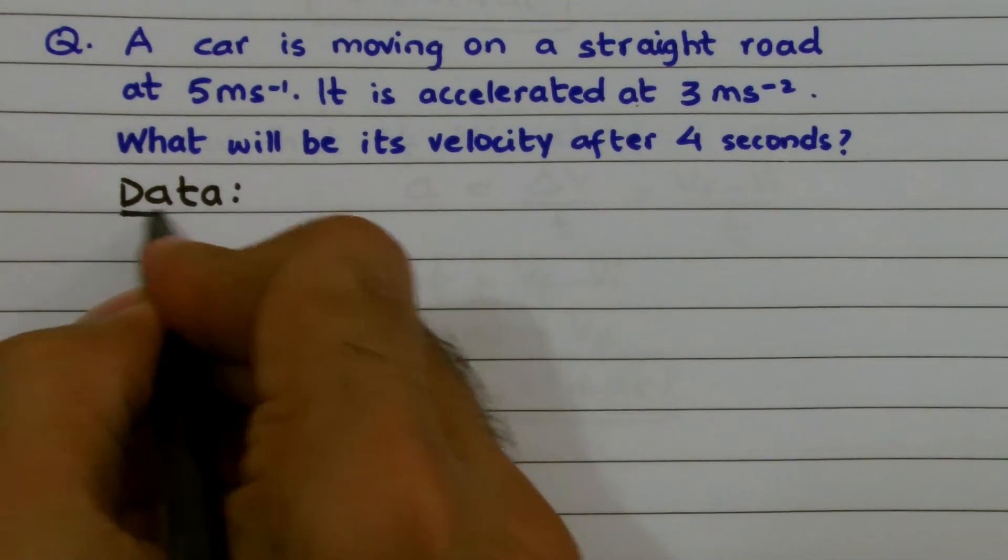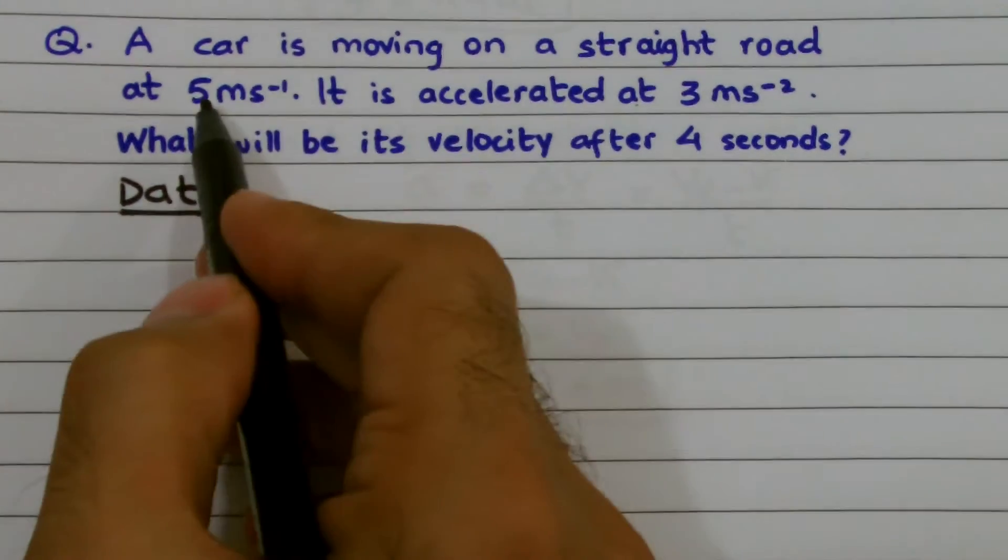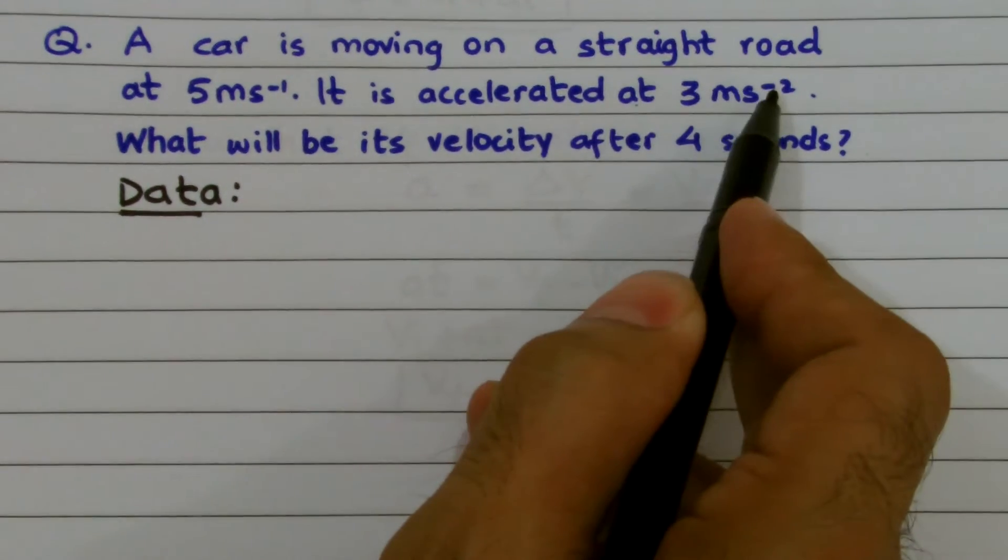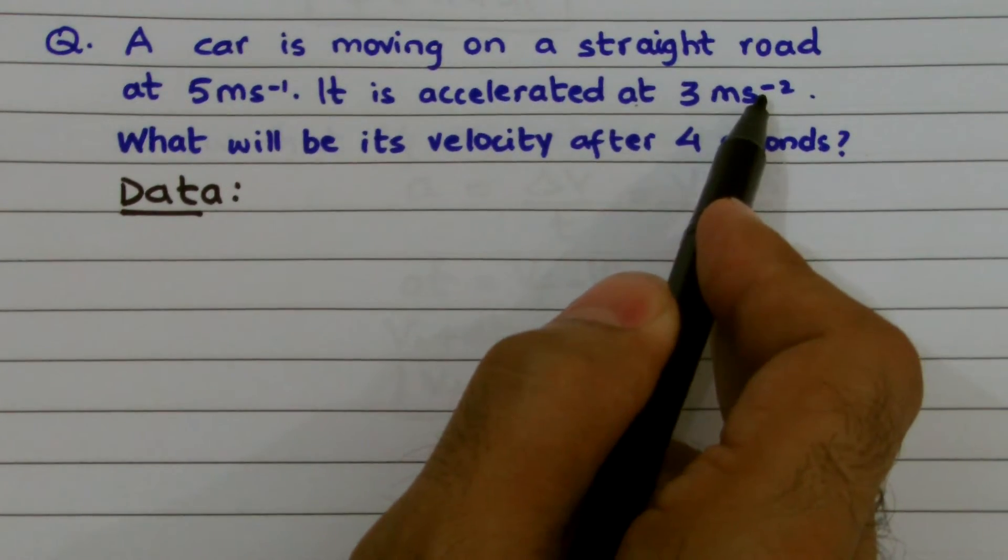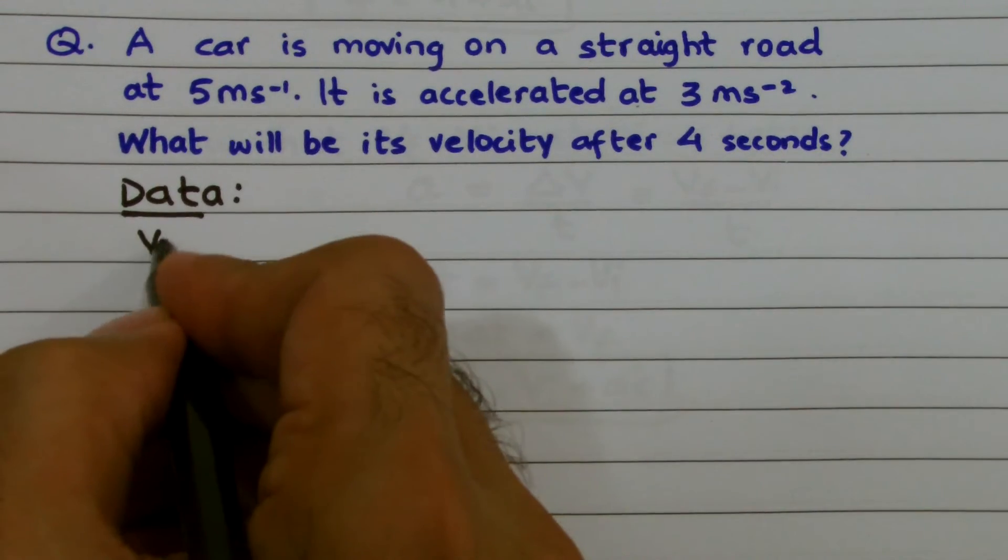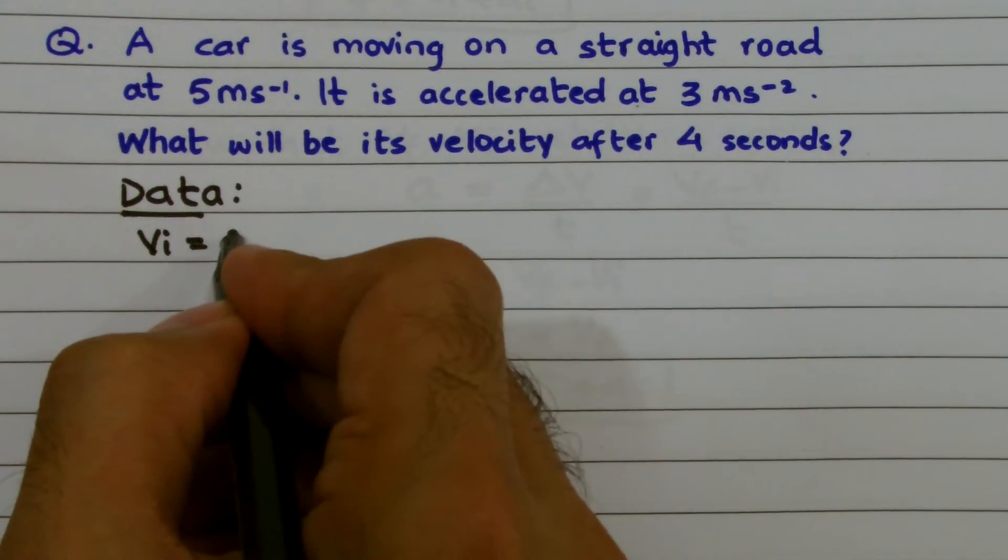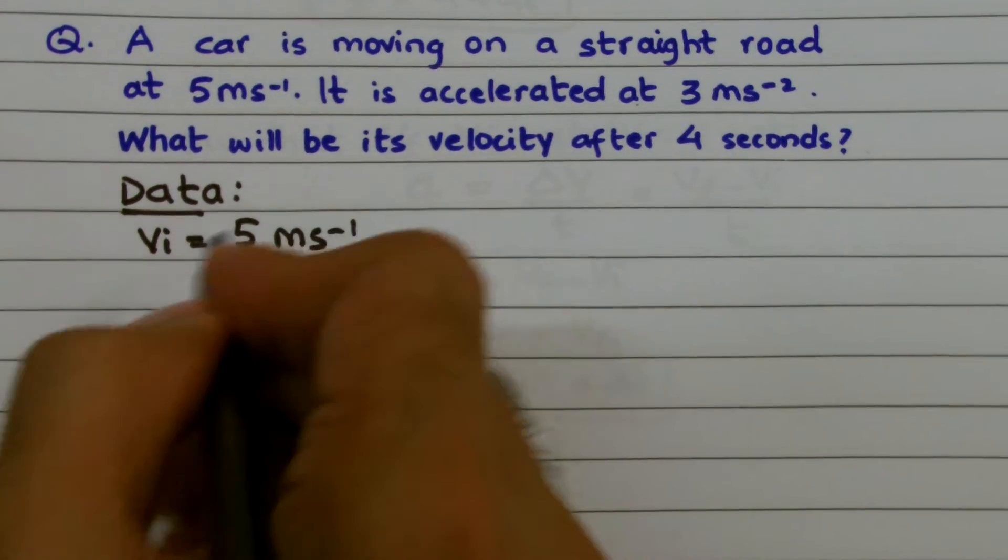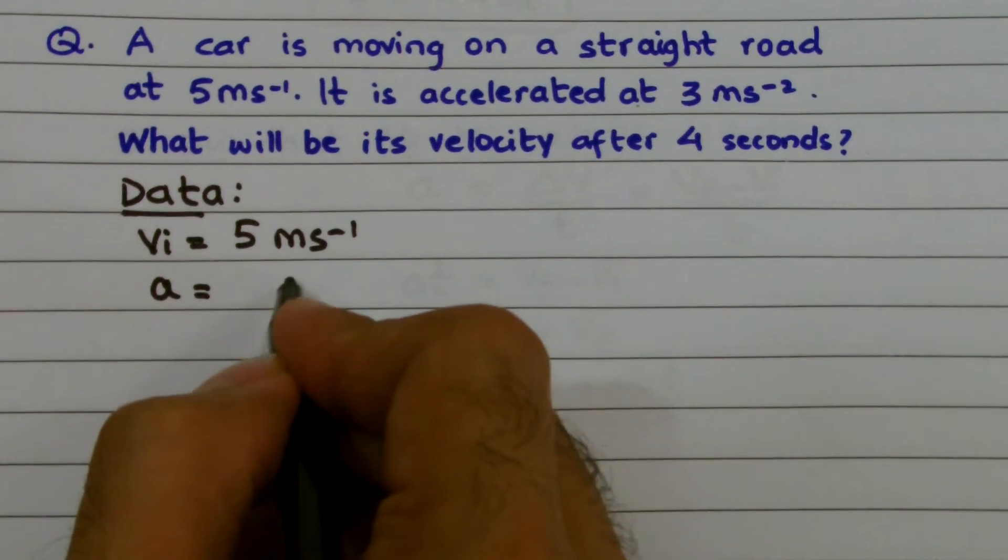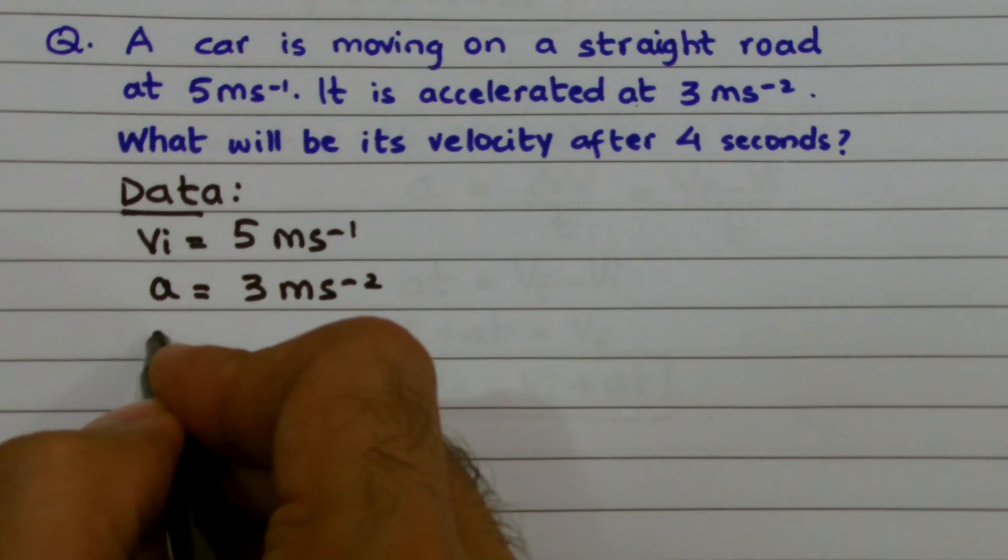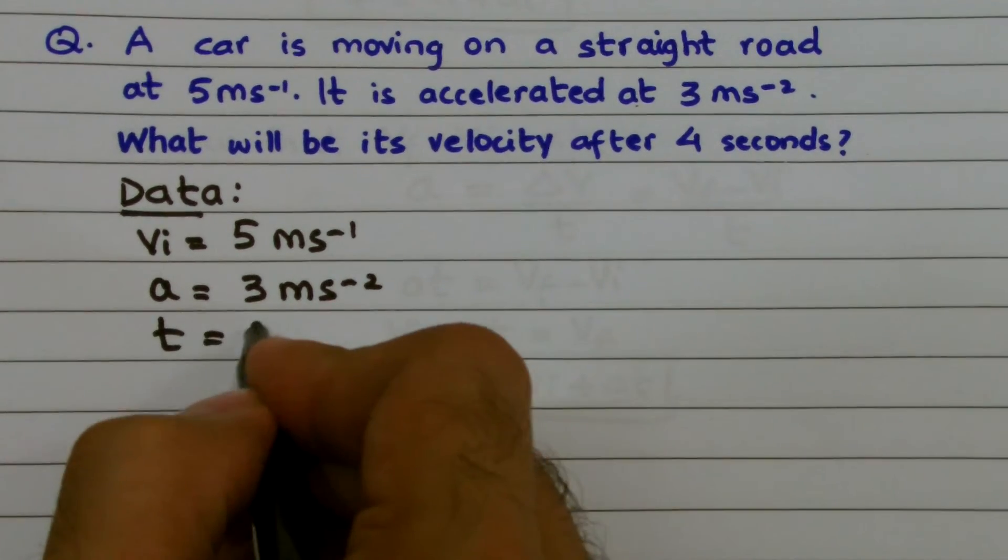I'm given the initial velocity of the car - you can see that value of initial velocity is 5 meters per second. The acceleration is given as 3 meters per second squared, and the time is given as 4 seconds. So VI = 5 m/s, a = 3 m/s², and we have the value of time, t = 4 seconds.